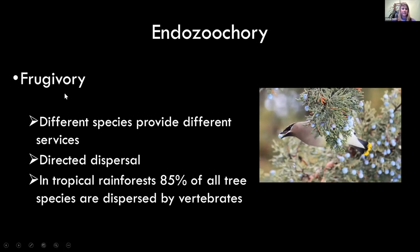Endozoochory is frugivory. You have birds that swallow a seed encased in a berry — there are just so many examples worldwide. This is generally what people think of when they think of birds dispersing seeds: the robin on the bush in your front yard consuming hundreds of berries and flying off. Here I have a cedar waxwing — I took this picture during my master's project — consuming a western juniper berry and then flying off, perching, and passing the seeds somewhere else.